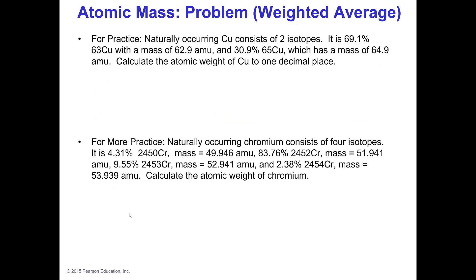Here are some more practice problems so you can try it yourself. Keep in mind the way it printed — the atomic number is always the smaller one — so that's chromium-50 with atomic number 24, chromium-52 with 24, chromium-53 with 24, chromium-54 with 24, and so on. The computer fonts didn't cooperate with what I was doing. And that's it for isotopes and weighted average!